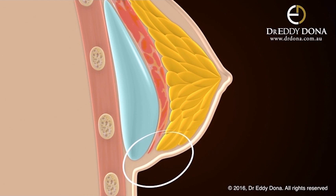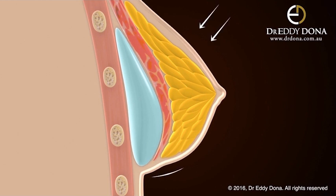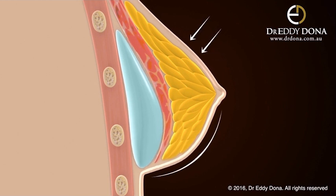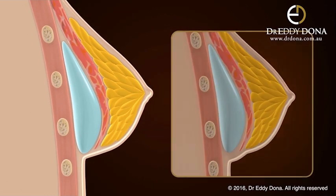Over time, as the breast tissue softens and the implant settles, this double bubble typically resolves, resulting in a smooth lower breast curve. However, sometimes due to a natural persistent tightness at the site of the original breast fold, this double bubble remains. Women that have a very tight lower breast fold and a greater amount of breast tissue are at a greater risk of developing this.